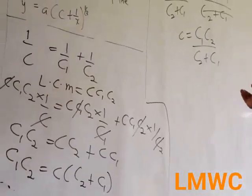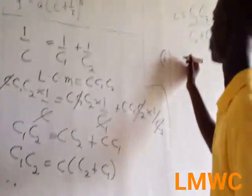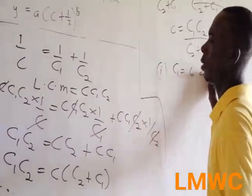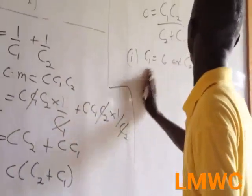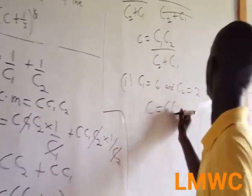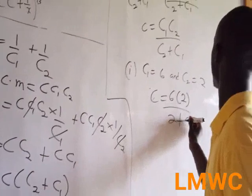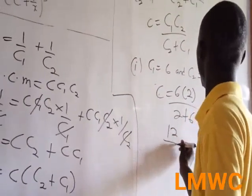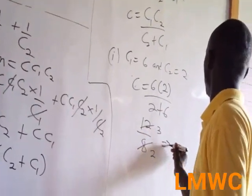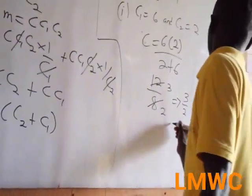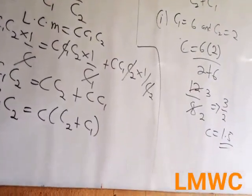I have made c the subject. Now find c if c1 = 6 and c2 = 2. So c = (6 times 2) over (2 + 6) = 12 over 8. Simplifying: 4 goes into 12 three times, 4 goes into 8 twice. So we have 3 over 2, and 3 over 2 is the same as 1.5.